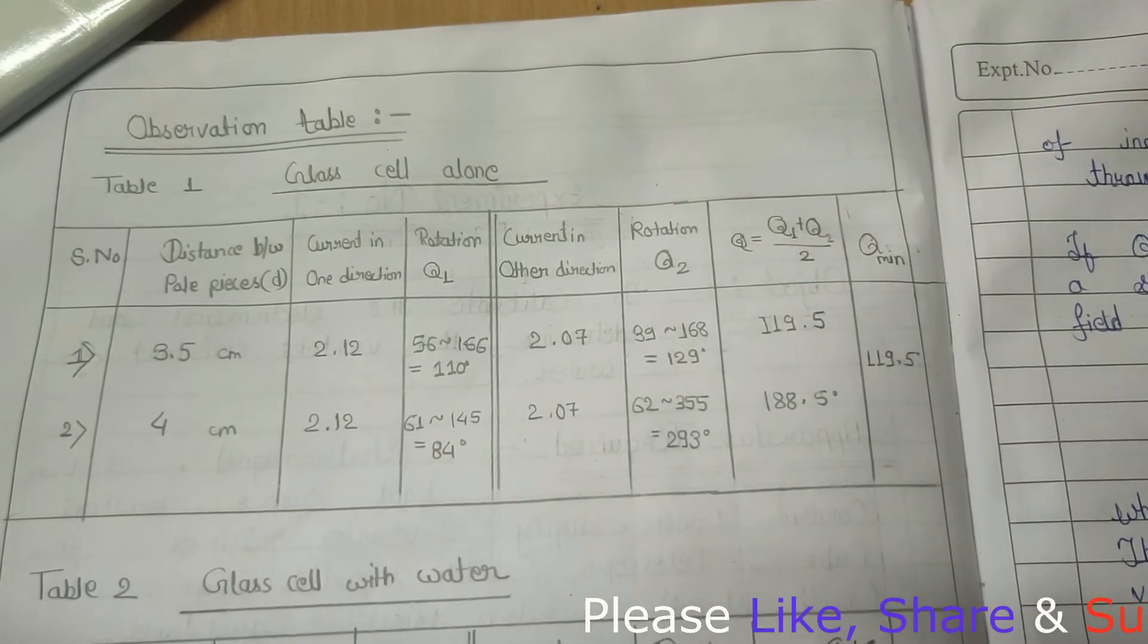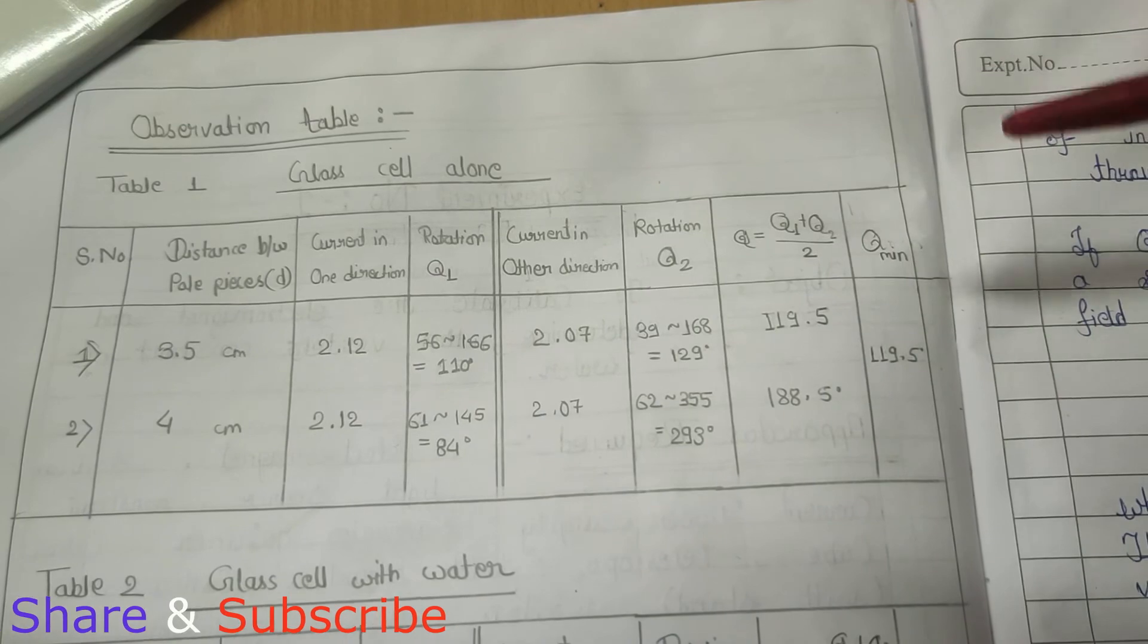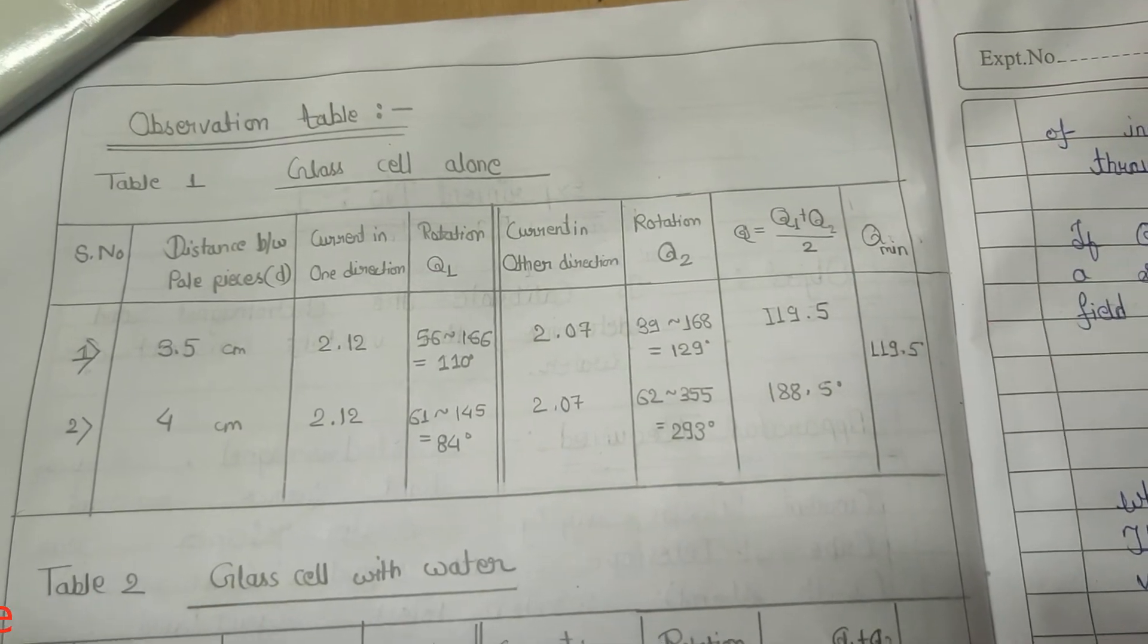Now we will take the current in the other direction. We will take the rotation angle θ maximum and then θ minimum. We will take the minimum of these two values, we will take the θ minimum.